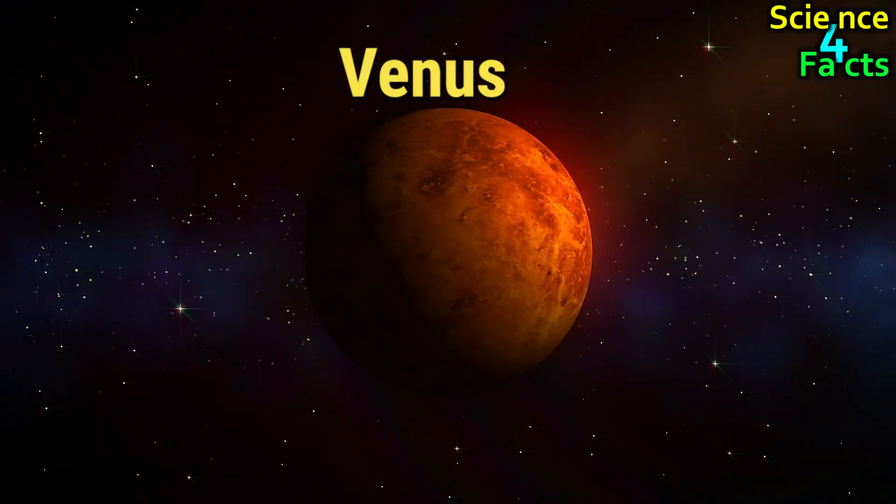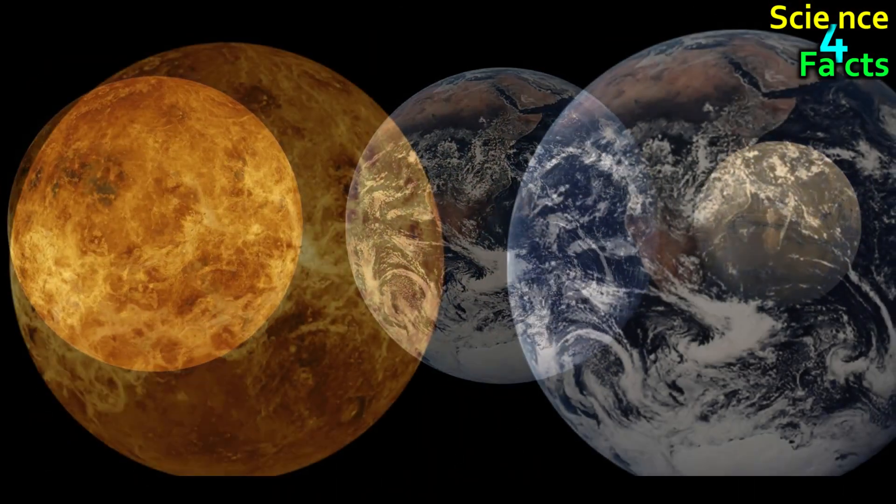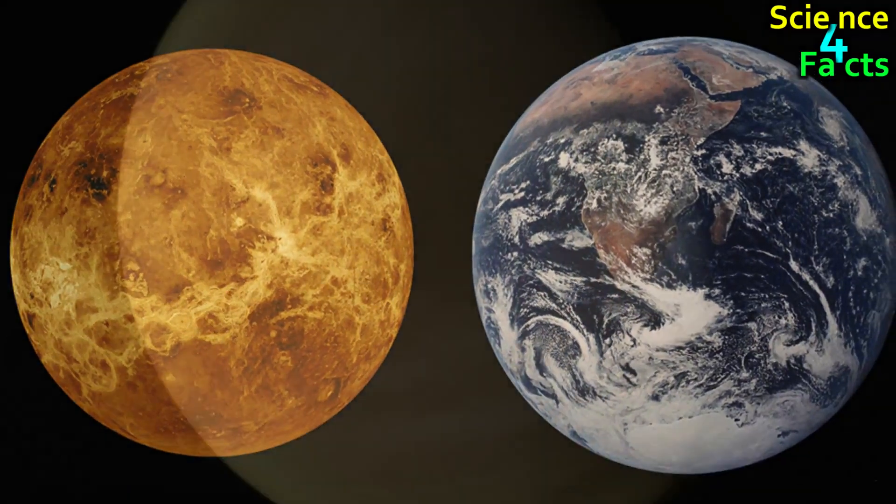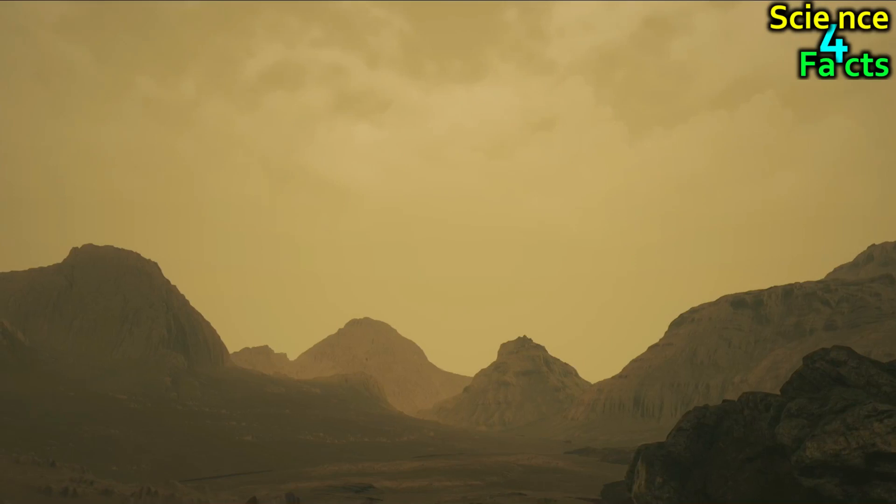Venus is often referred to as Earth's sister planet due to its similar size, mass, and composition. However, its surface is very different from Earth's, with a thick, toxic atmosphere and extreme temperatures that make it one of the most inhospitable places in the solar system.